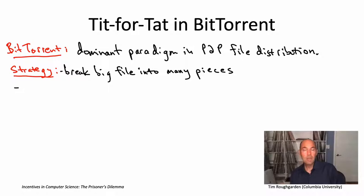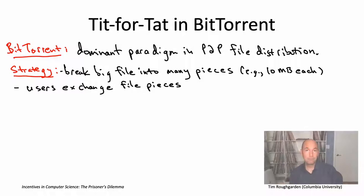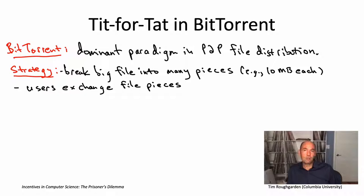So rather than users transacting with each other by passing around the whole 10-gigabyte file, they're only going to be exchanging 10-megabyte pieces. There are multiple reasons you might want to break a big file into small pieces — like more efficient use of network capacity. But what's interesting for us is that it really changes the incentives. If you thought about things just at the level of a file itself, we basically have that single-shot prisoner's dilemma setup, with very strong incentives to defect.